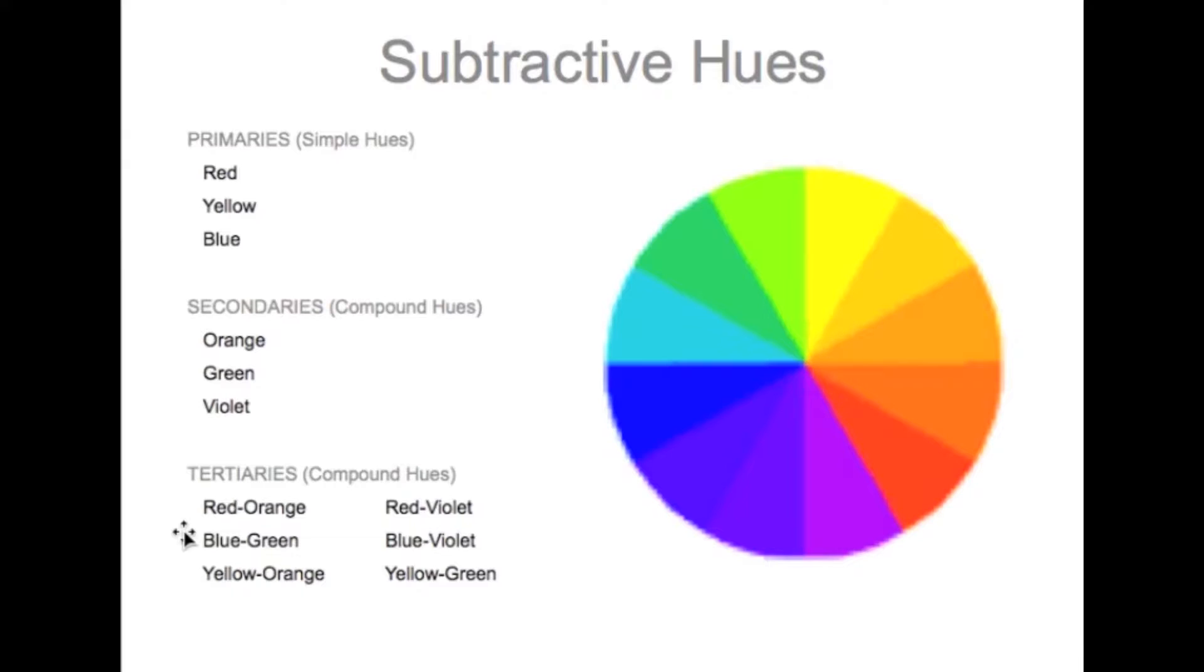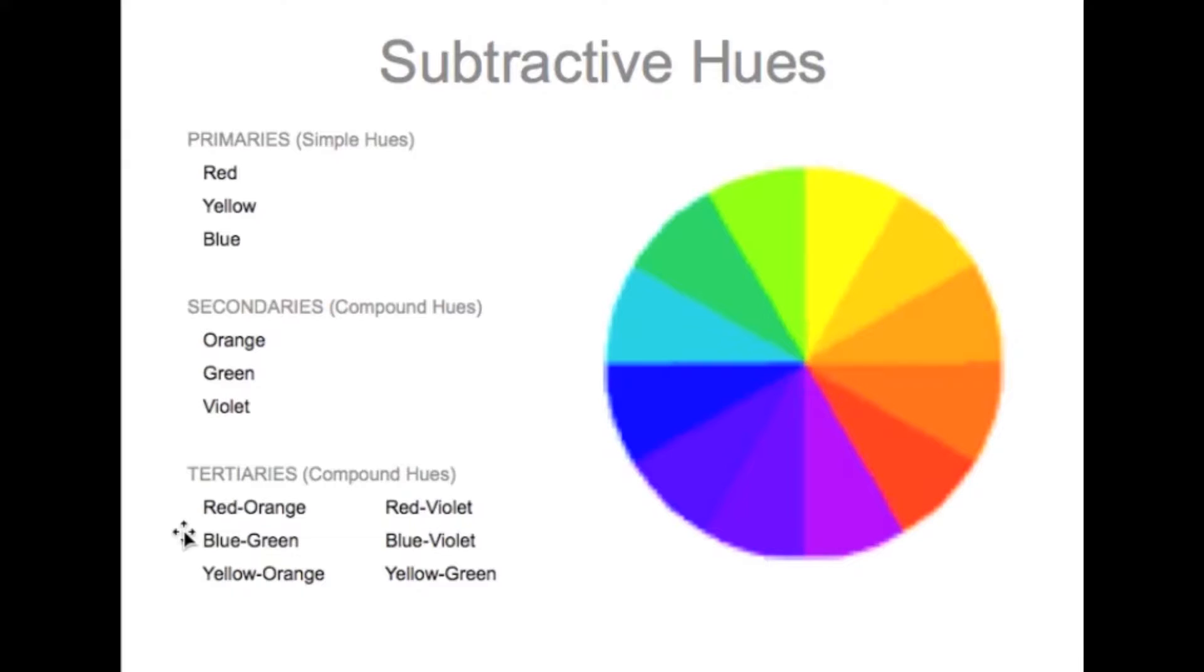And the after image is what makes the Itten 12-hue system the most practical of all the subtractive systems. There are other systems of color. There's Goethe, there's Holtzl, there's Munsell, there's Ostwald. The Itten one is the most practical because it is the one that closely seems to resemble or reflect actuality.